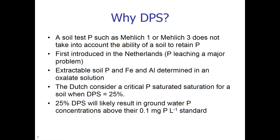Why DPS? A simple explanation is that a soil test P, such as Mehlich-1 or Mehlich-3, does not take into account the ability of a soil to retain P. DPS was first introduced in the Netherlands where P leaching is a major problem. Their soils are sandy. The extractable soil P, iron, and aluminum were determined in an oxalate solution. The Dutch consider a critical P saturation for a soil when DPS equals 25%, which will likely result in groundwater P concentration above the 0.1 mg P per liter standard.